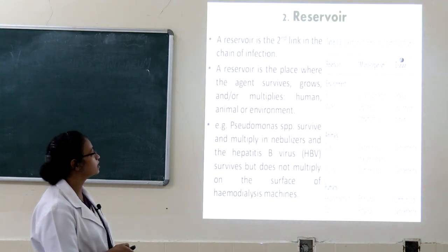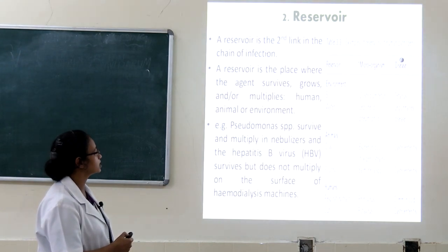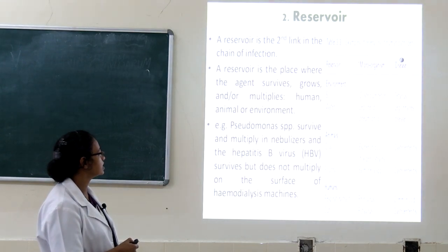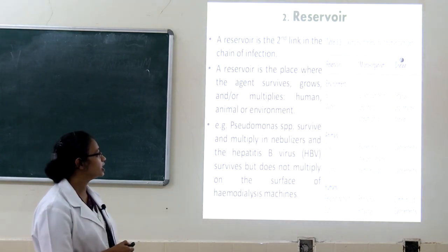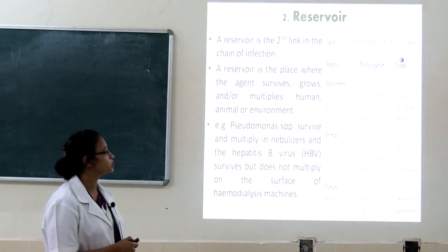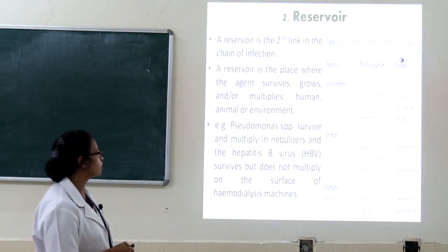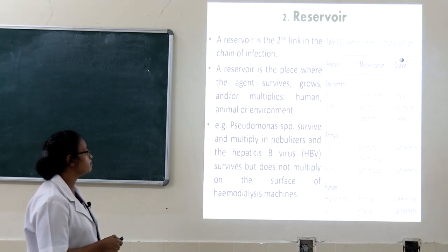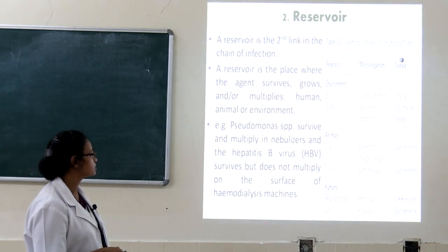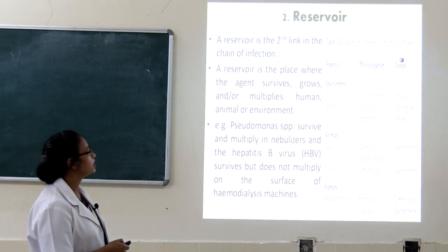The second component in the chain of infection is the reservoir — the place where the agent survives, grows, and multiplies, such as in humans or the environment. For example, Pseudomonas survives and multiplies in nebulizers, and the hepatitis B virus survives but does not multiply on the surface of hemodialysis machines.